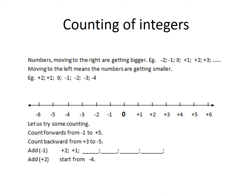Now let's count backwards. We're going to start from positive 3 and go to negative 5. Let's start: positive 3, positive 2, positive 1, 0, negative 1, negative 2, negative 3, negative 4, negative 5.